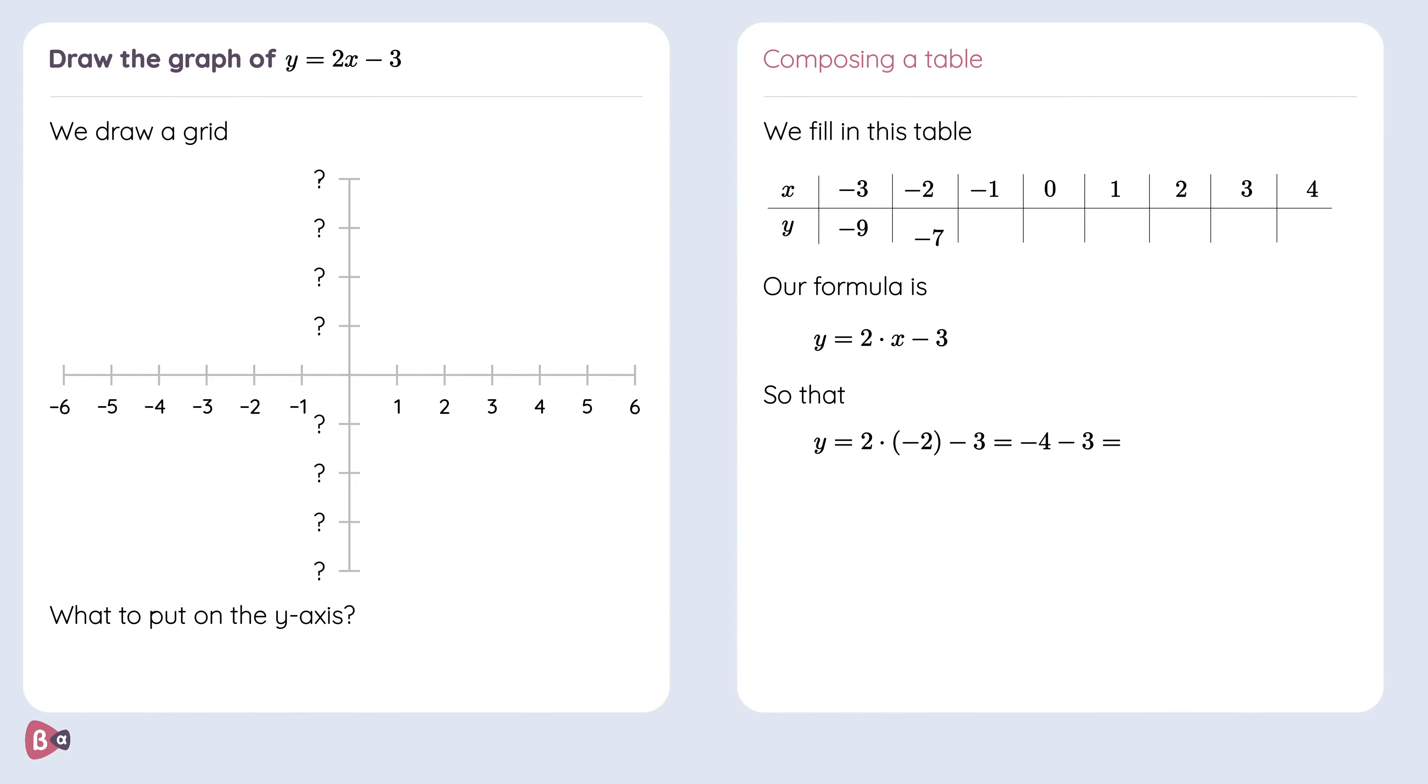Again put this in our table and finally we'll calculate minus 1. So substitute x is equal to minus 1. 2 times minus 1 is equal to minus 2. Subtract 3 which will give us minus 5.